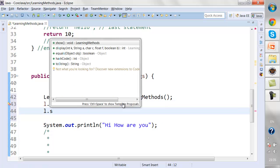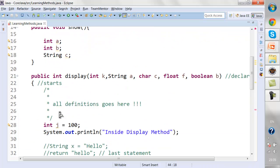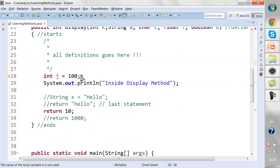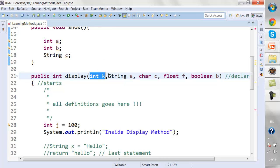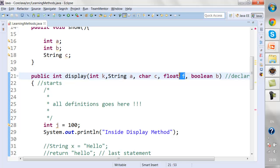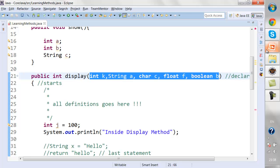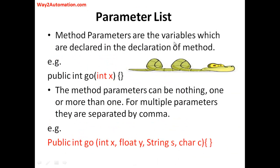When I call l.display(), I need to provide values to its parameters. But when I call l.show(), it's not mandatory to provide values, since 'show' has no parameters declared. Any parameters declared in a method's signature must be provided values when the method is called. Parameters are separated by commas, and a method can have no parameters, one, or more than one.